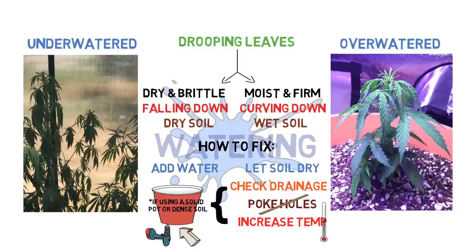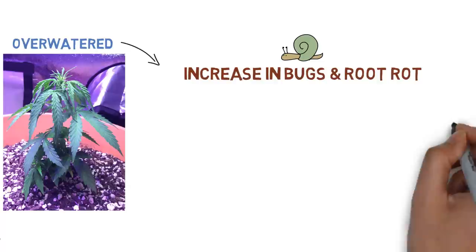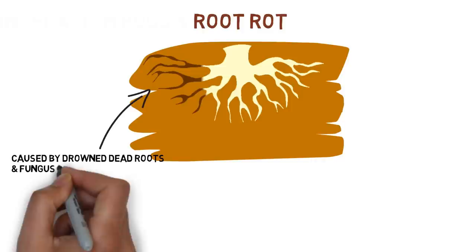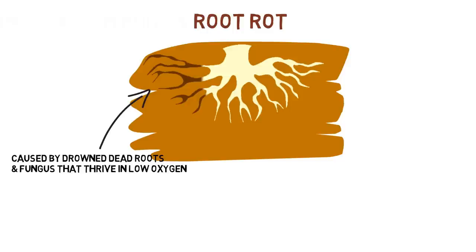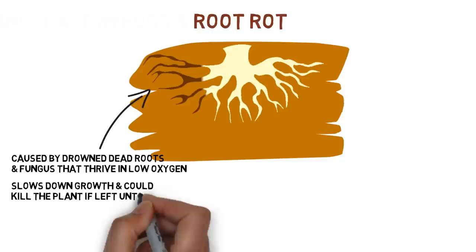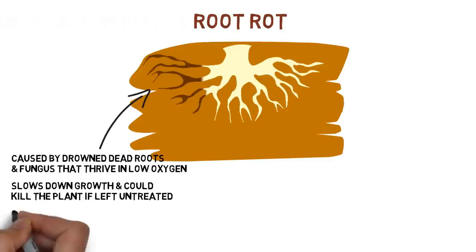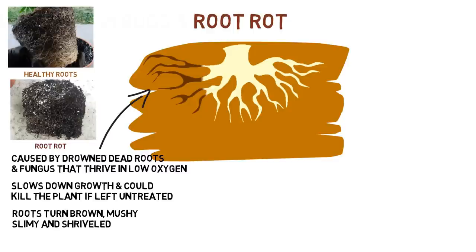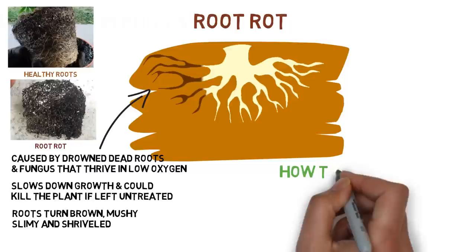Drying the soil fast is critical because not only is the plant recovering from drowning, wet soil also creates the perfect environment for certain bugs and root rot. Root rot is a disease that thrives in prolonged low-oxygen environments and can slow or completely destroy the plant. If your plant isn't recovering from overwatering even after the soil is dry, this is probably why. Check the roots — if they're brown, slimy, or shriveled, that confirms root rot.